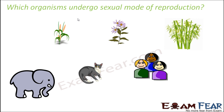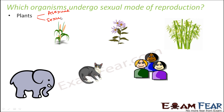Now the question is, which organisms undergo sexual mode of reproduction? Because for asexual mode, we saw a lot of bacteria, fungi, and even plants undergo asexual reproduction. Asexual mode is seen in organisms with relatively simpler body organization, but sexual mode is seen in most higher organisms with complex body structure, like higher plants and animals. In plants we see both sexual and asexual modes of reproduction. Whereas in case of animals, they mostly prefer — in fact, sexual mode is the only mode of reproduction for animals. In some fungi also, we see sexual mode of reproduction.